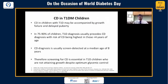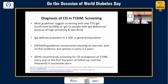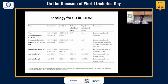Celiac diagnosis is usually screen-detected at a median age of eight years. Screening is essential, particularly in those having growth failure despite optimal glycemic control. Most guidelines suggest screening with anti-tTG IgA, also confirmed by the endomysial antibody, or IgG in patients with IgA deficiency, as this has the best sensitivity and specificity. IgA deficiency occurs in 1 in 500. Other guidelines recommend retesting at intervals — usually every two to three years. ISPAD recommends screening for celiac disease at diagnosis of type 1 diabetes and every five years thereafter. The most common test is tissue transglutaminase IgA, which is the recommended test for screening.